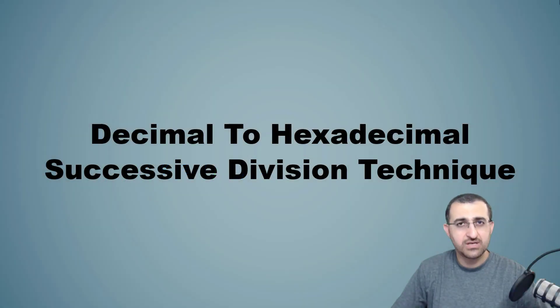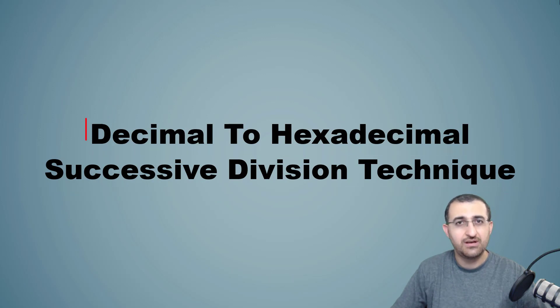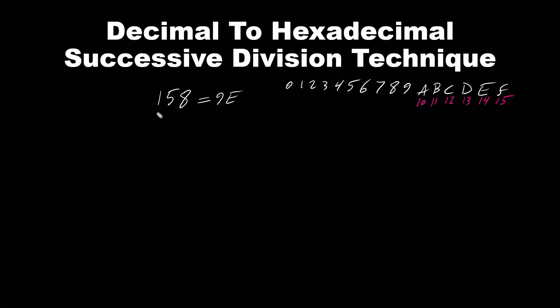Now in this section we will use successive division technique to convert decimal to hexadecimal number. Okay, here let's use 158, same decimal number that we used earlier to convert it to hexadecimal number using successive division technique.